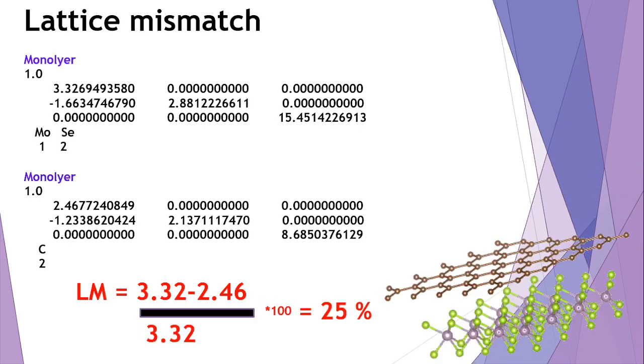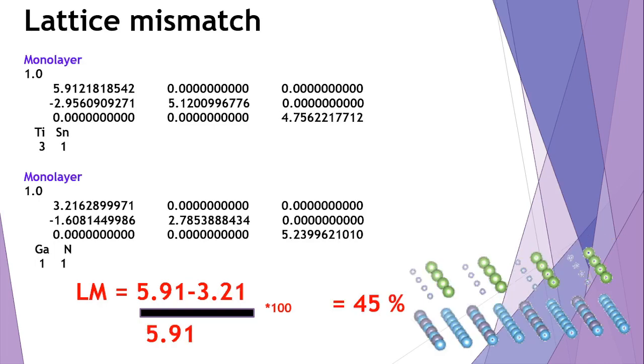If you do this with molybdenum disulfide and graphene - pasting coordinates of graphene into monolayer of molybdenum disulfide - you will end up with a 25 percent mismatch. It's a very big number. If you try to do the calculation, you will end up with very obscure results, and the heterostructures you have created may not be stable. In the next slide, if you take the example of gallium nitride and Ti3Sn, the lattice mismatch is approaching 45 percent.